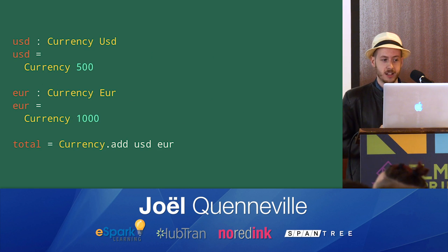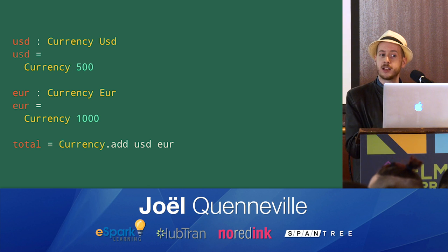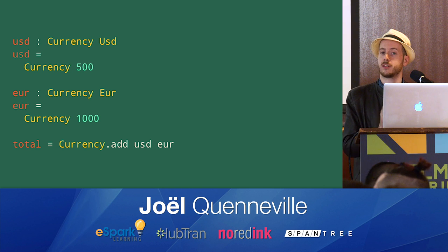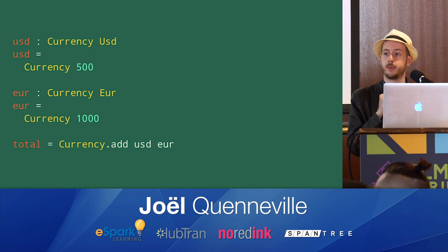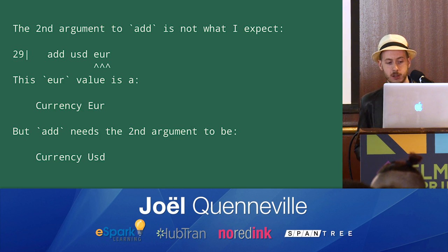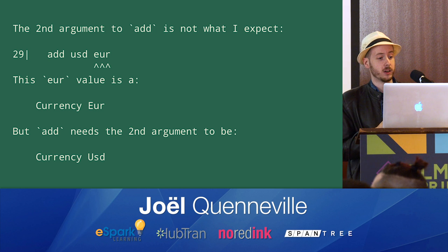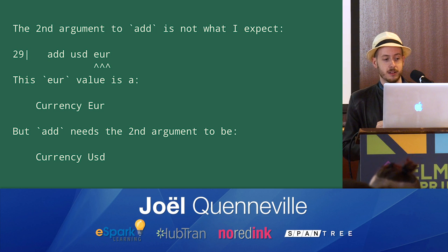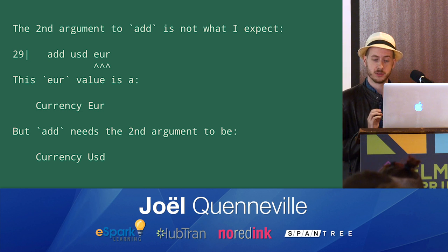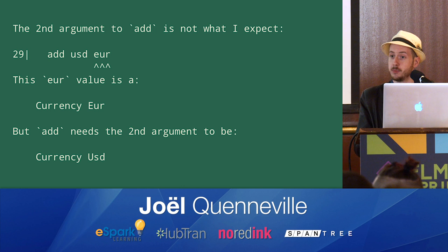Let's see it in action. Here we create again US dollars and euros, and notice that now I've added a type signature above them. Because now I want to tell the compiler specifically — even though the wrapper doesn't know — I want you to know I've tagged this: this is of type euro or type US dollar. And when we try to add the two, sure enough, we get an error that tells us that the second argument to add is not what we expect. We should be adding two US dollars, but we're adding US dollars and euros. So I think we've successfully communicated. Constraint has been enforced.